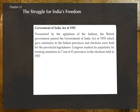Government of India Act of 1935: Pressurized by Indian agitation, the British government passed the Government of India Act of 1935, which gave autonomy to Indian provinces. Elections were held for provincial legislatures, and Congress demonstrated its popularity by forming ministries in seven out of eleven provinces in the elections held in 1937.